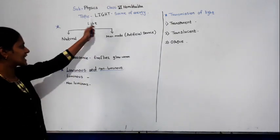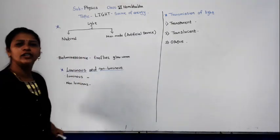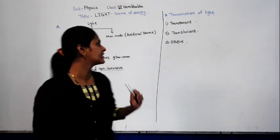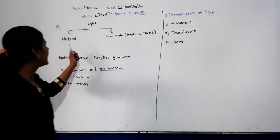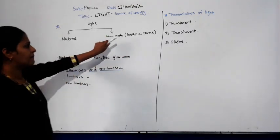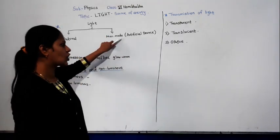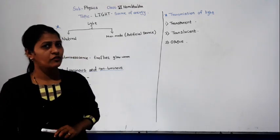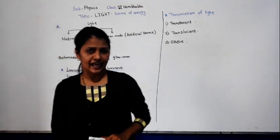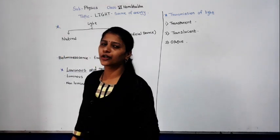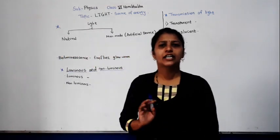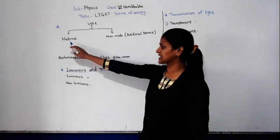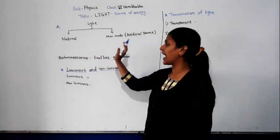Mainly, light is classified into two types: natural and man-made. Man-made is also called an artificial source of light. So we are going to distinguish between the two main types of light — natural and man-made.